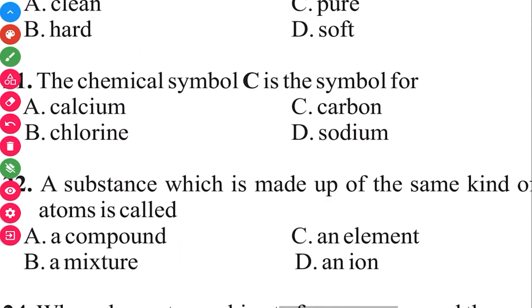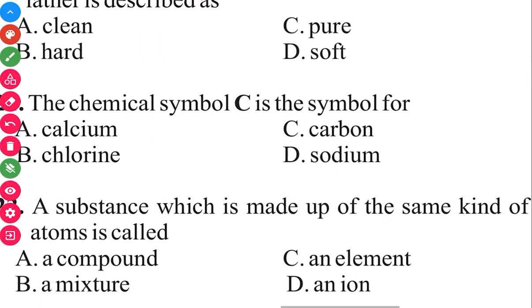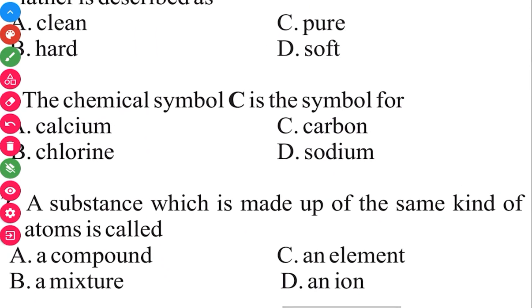Question 22. A substance that is made up of the same kind of atoms is called an element. The answer in 3, 2, 1 is an element. An element is made up of only one kind of atom.